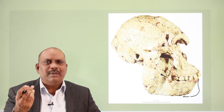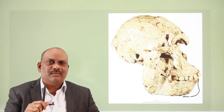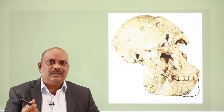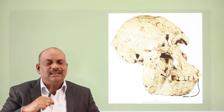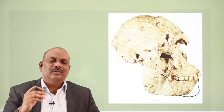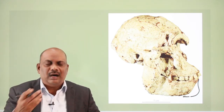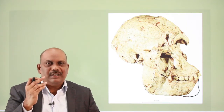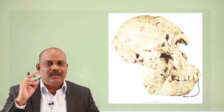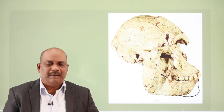When they bite and chew, there will be stress in the chin region. To make the bones there further stronger, chin developed as a reinforcement. So chin developed only during the later stage. Even in Australopithecus, chin is absent.